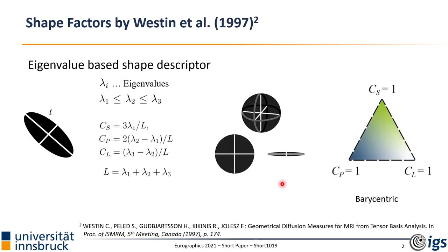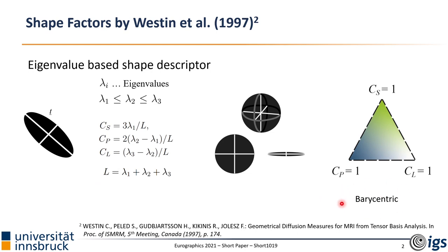The second-order tensor is decomposed into eigenvalues and eigenvectors. The eigenvalues are used to compute the shape factors introduced by Westin. The eigenvalues lambda_i are used to compute three shape factors: the sphericity Cs, the planarity Cp, and the linearity Cl. They are all normalized by the sum of their eigenvalues and thus lie in the interval 0 and 1. They form a barycentric coordinate system and describe the shape of the ellipsoid.